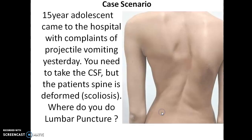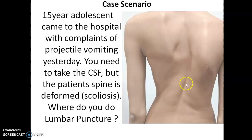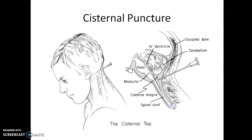Returning to the case scenario: the person admitted with projectile vomiting and signs of meningeal irritation requires CSF, but we cannot draw it at the L3-L4 junction because the spine is deformed and the exact position of the spinal cord is unknown — we may damage it. Therefore, we should perform a cisternal puncture — puncturing the cerebro-medullary cistern. However, vital structures like the medulla oblongata are present here, and if the needle damages it, vital centers such as the respiratory and cardiovascular centers will be destroyed, causing immediate death.